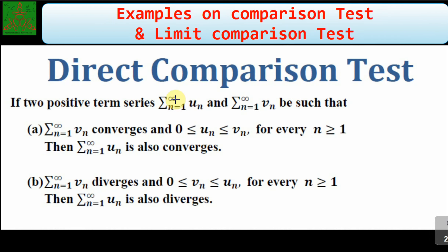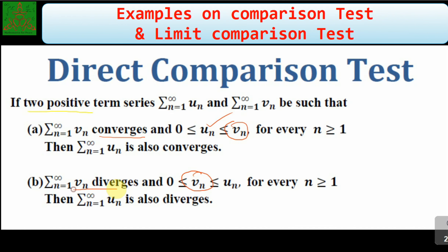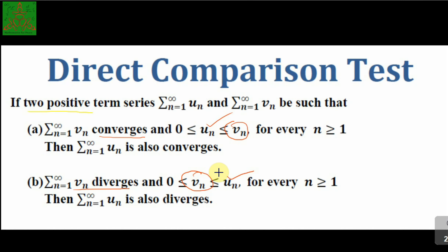In the comparison test, we have two series: summation of u_n and summation of v_n, which are two positive term series. If the summation of v_n is convergent — meaning the bigger series is convergent — then its smaller one is also convergent. Conversely, if the smaller series is divergent then v_n is divergent, and its bigger one is also divergent.